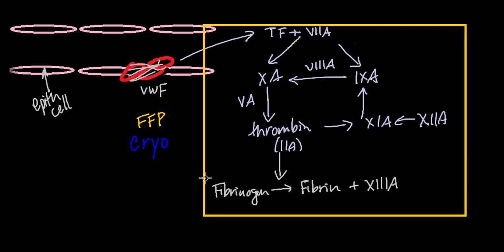Cryoprecipitate, on the other hand, has a smaller volume and is rich in fibrinogen, factors 8 and 13, as well as von Willebrand factor. Von Willebrand factor helps platelets adhere to the site of injury.